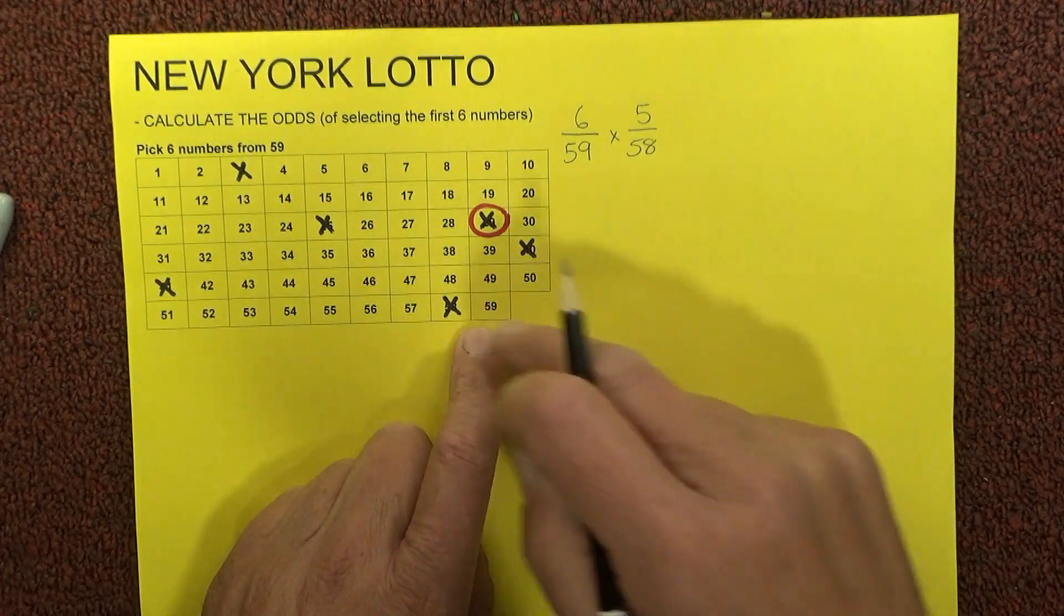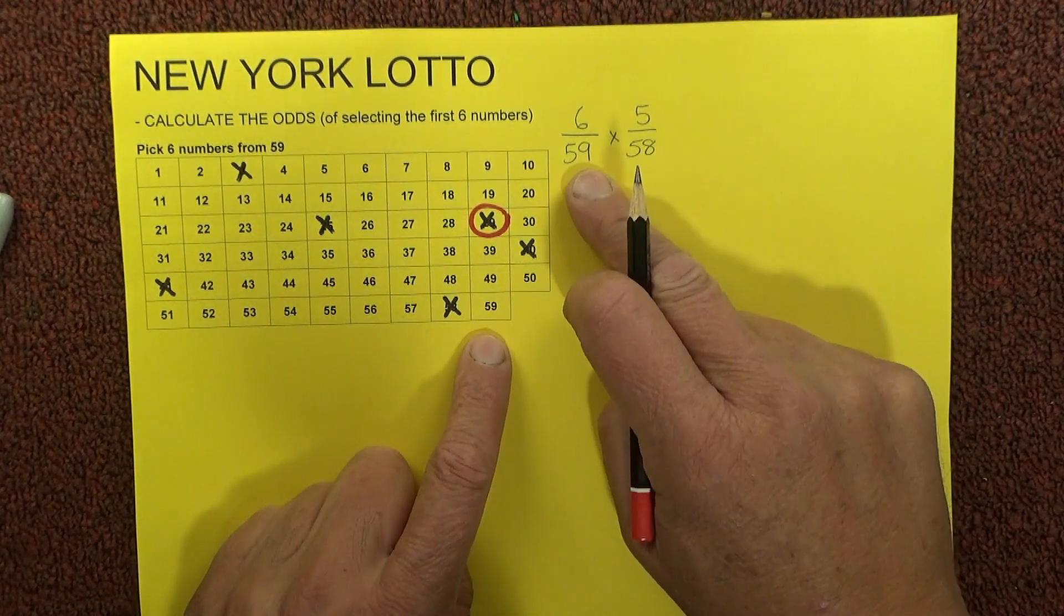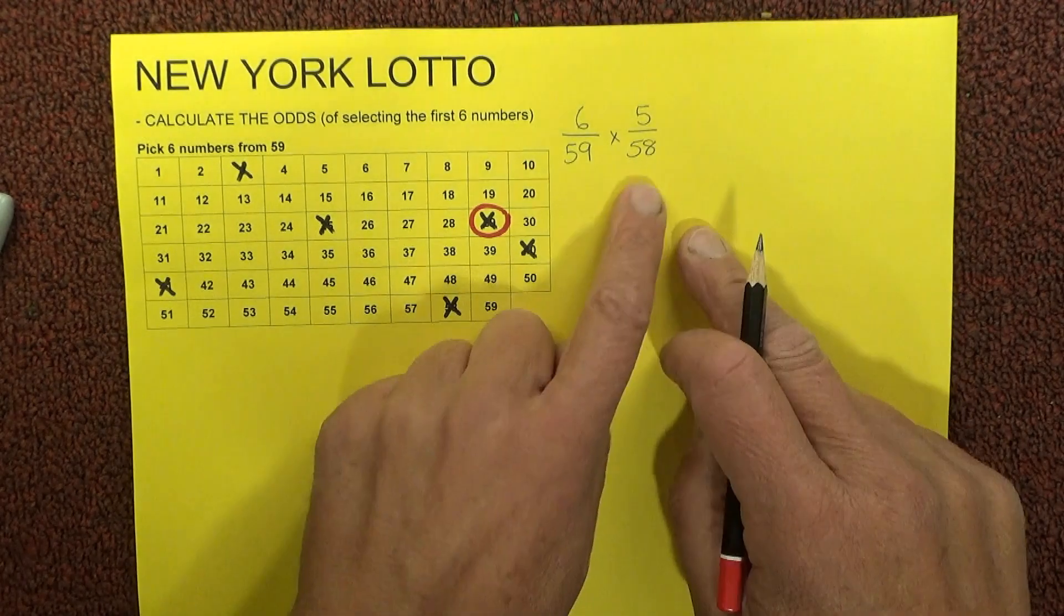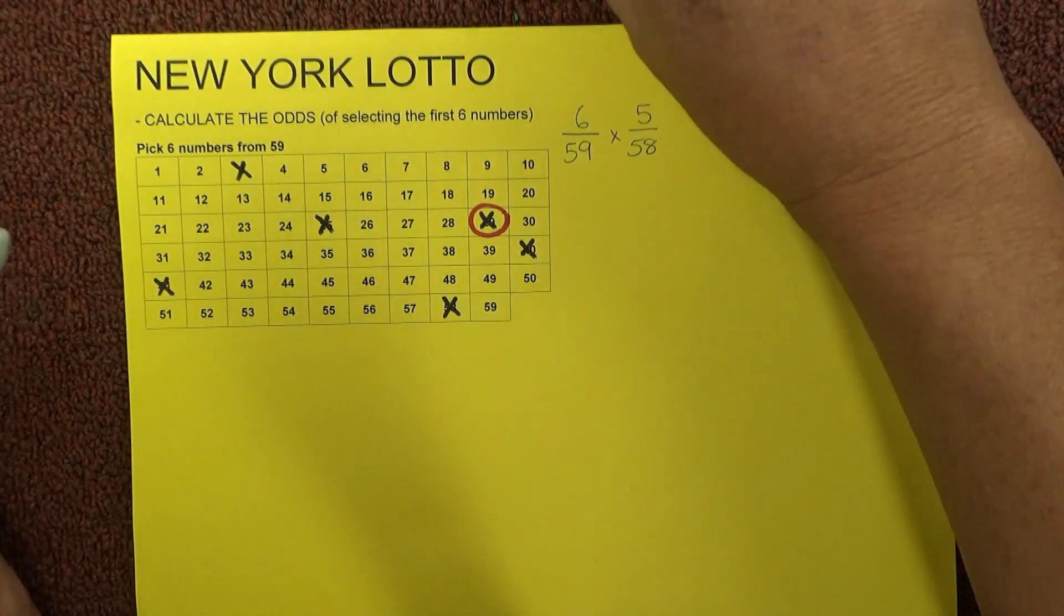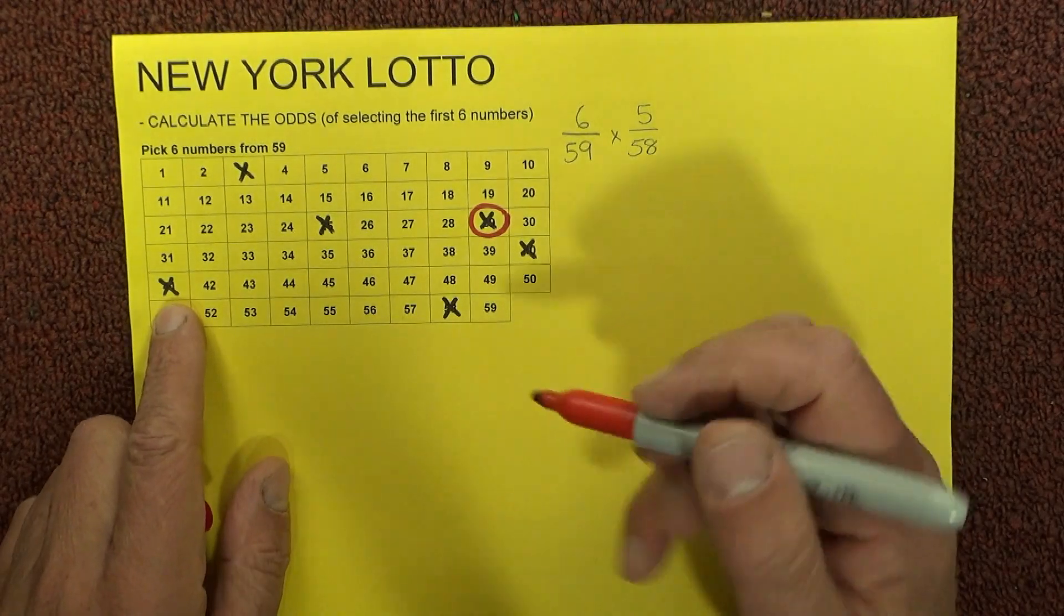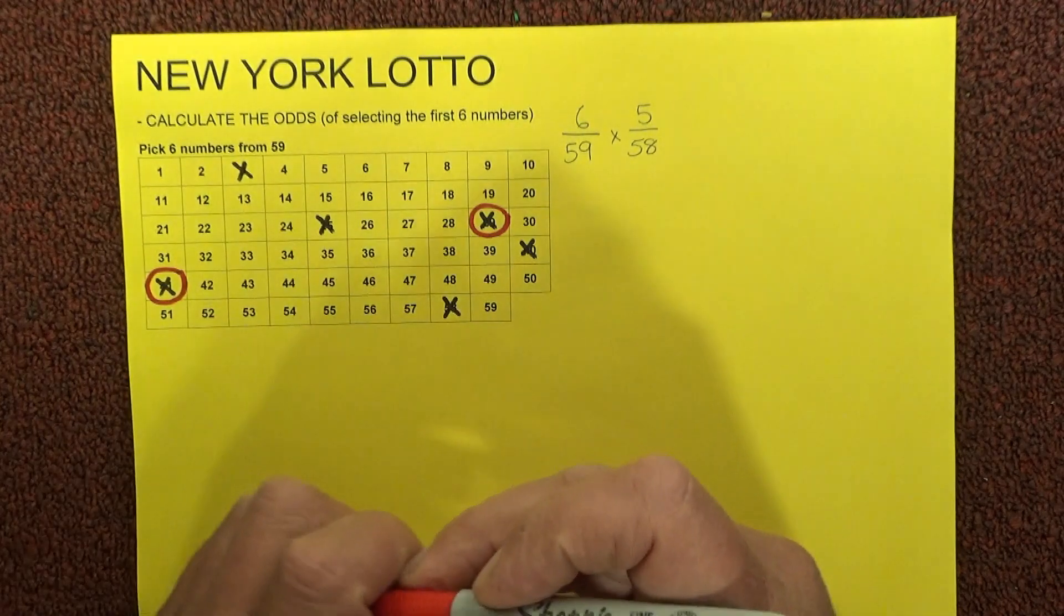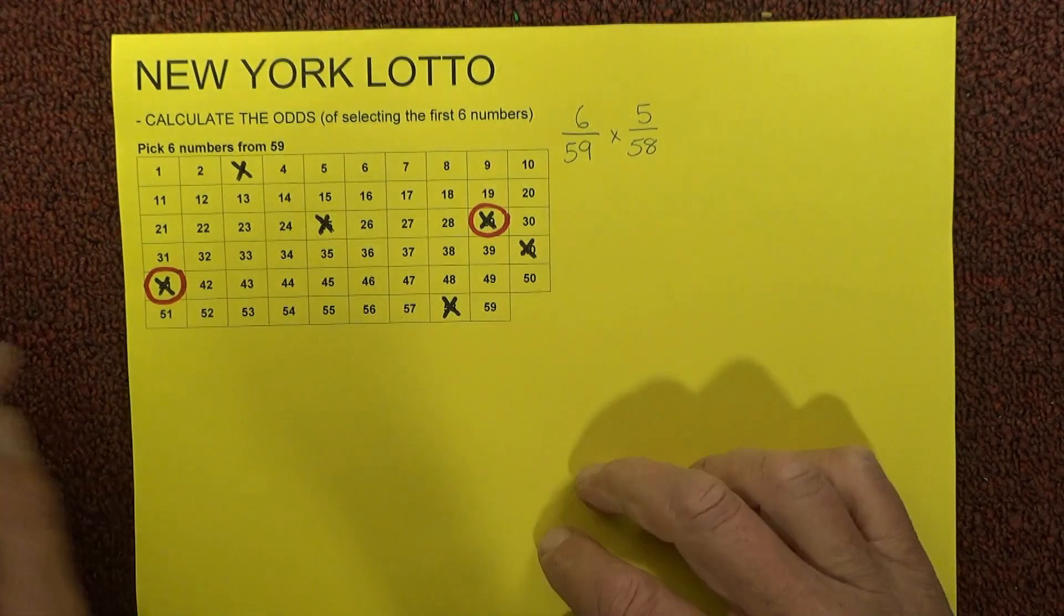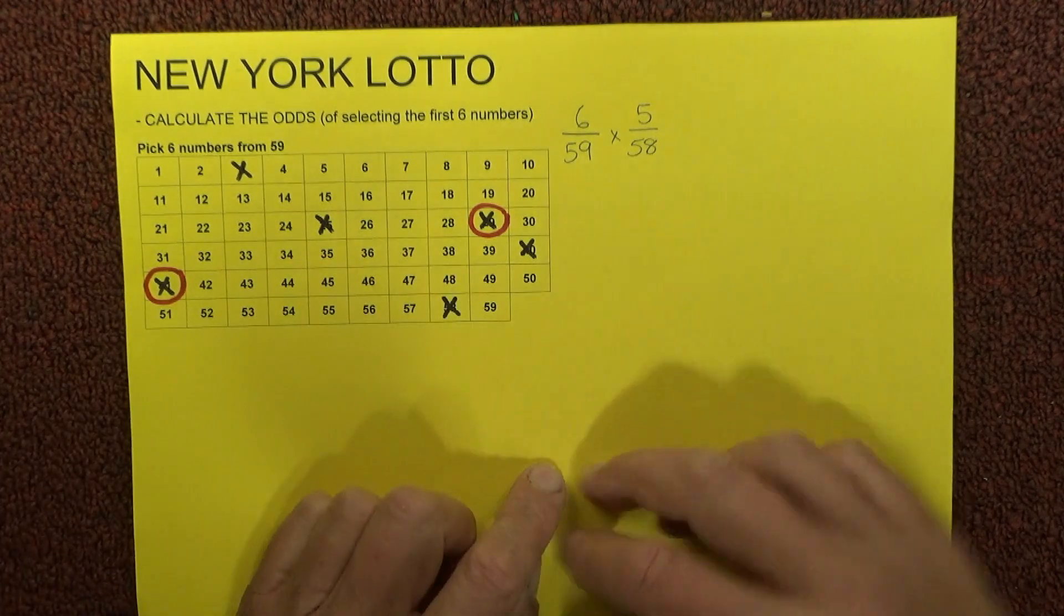If you could imagine, it starts out with 59 in the barrel, and every ball that's drawn out of the barrel is one less ball. So we start off with 59 balls and then move on to 58 balls for the second one that's drawn. To indicate that you have actually matched one of those numbers, I'll just randomly mark off one of those numbers. I've marked off number 41.